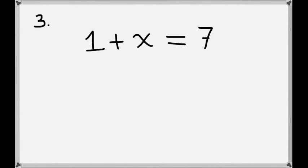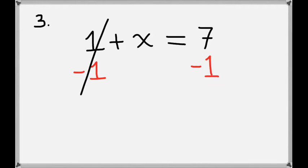On the third problem we have 1 plus x equals 7. Again we want to get x by itself, so we'll subtract 1 from the left hand side. But we have to do that to the right hand side as well. We'll cancel the ones on the left hand side.